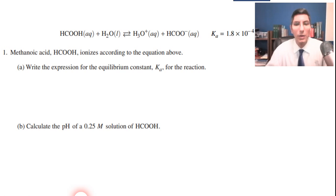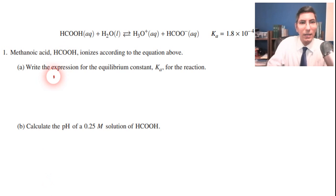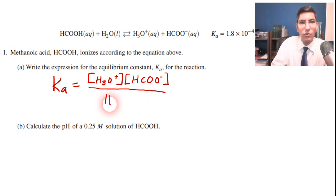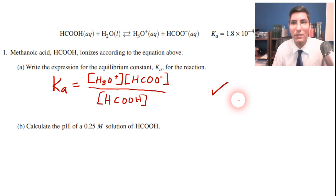Let's take a look at question one here. We have methanoic acid with the formula HCOOH ionizes according to that equation. Part A says write the expression for the equilibrium constant Ka. So Ka is equal to products over reactants raised to the power of the coefficients. We're looking at H3O plus concentration times HCOO minus concentration all over HCOOH concentration. Don't forget we always omit water in the liquid form because liquids are not included in these equilibrium expressions. If you got that you can give yourself one point.